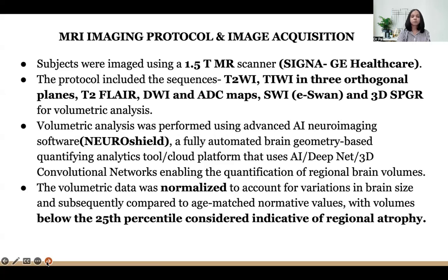Volumetric analysis was performed using advanced AI neuroimaging software called NeuroShield, a fully automated brain geometry-based quantifying analytics tool on a cloud platform using AI, deep net and 3D convolutional networks, enabling quantification of regional brain volumes. Volumetric data was normalized to account for brain size variations and compared to age-matched normative values, with volumes below the 25th percentile considered indicative of regional atrophy.